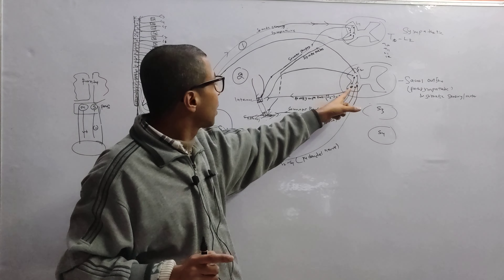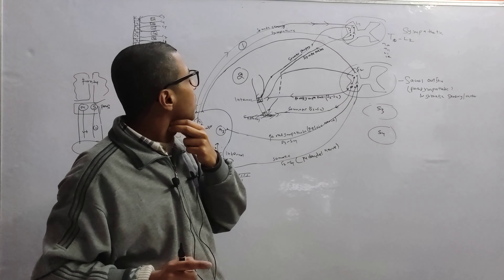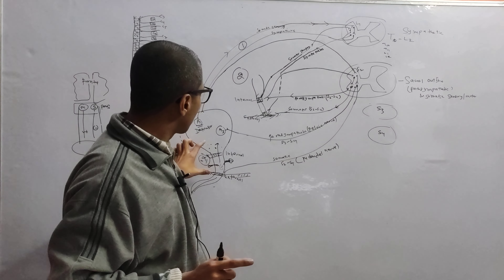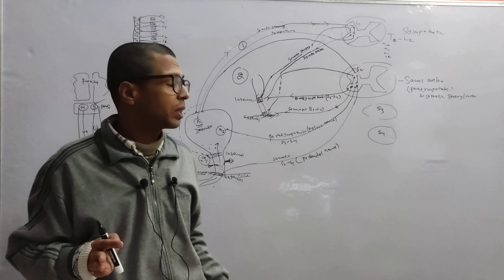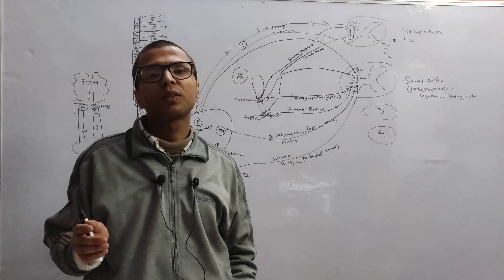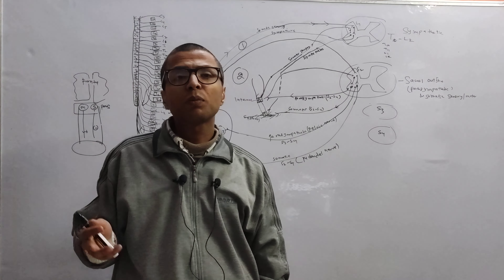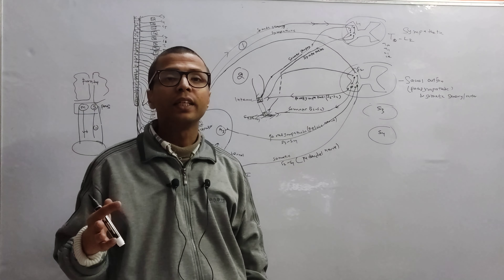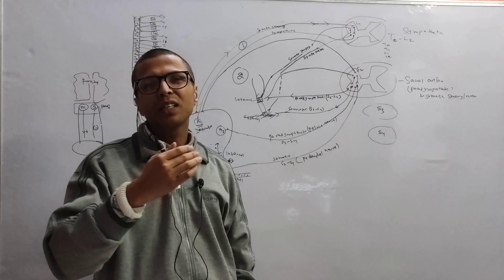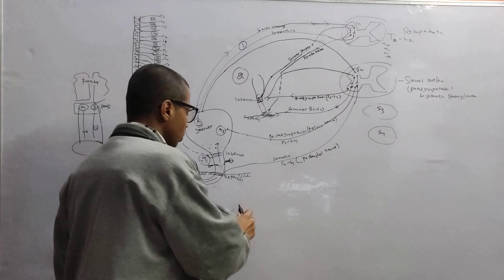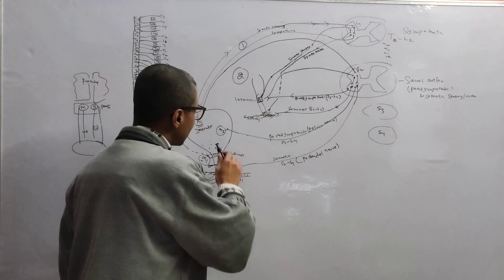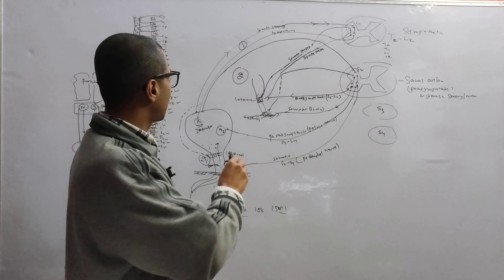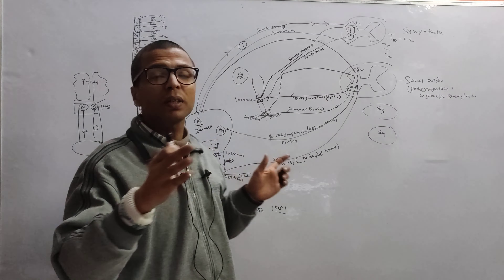Sensory information also goes to the S2, S3, S4 level. Through the dorsal horn, sensation goes in, and from the anterior root parasympathetic nerve comes through and innervates via M3 muscarinic receptors. Somatic motor fibers also come here. Similarly for the anal sphincter: sensory information goes in, sympathetic and parasympathetic fibers come from the sacral level, and somatic motor fibers innervate the external sphincter.